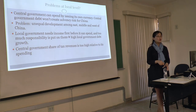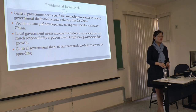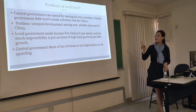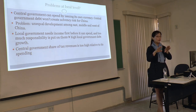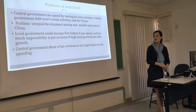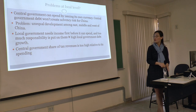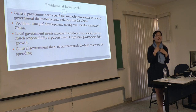From all those graphs, you can tell there are problems at the local level. The central government can spend by issuing its own currency, and central government debt won't create sovereignty risk for China — that's the nature of sovereign currency. The problem is unequal development among east, middle, and west China. The east is very developed, like the US, while the middle and west are less developed. Local governments need more income before they can spend — they are not currency issuers. Too much responsibility is put on local governments, leading to high local government debt. That's the key issue happening in China right now.